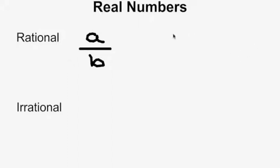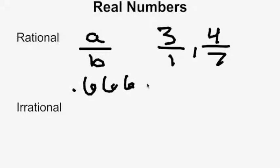So numbers such as 3 can be written as 3 over 1. And you have your fractions of 4 over 7 and the rest. And even decimals such as 0.6667 can be written as 2 over 3.